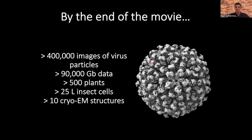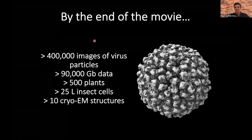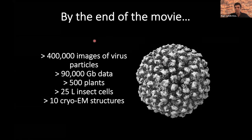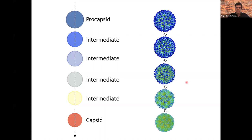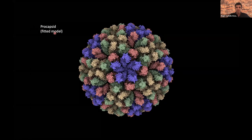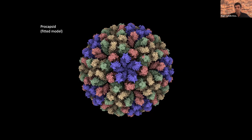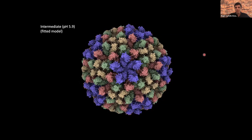The final movie took many particles, images, and structures. We have a summary of these structures going from the procapsid to the capsid, with a reduction in size as maturation proceeds. To compare them, I'll show you the fitted models into the cryo-EM maps. Each different color is one subunit. Subunits go in tetramers — groups of four — which is why there are four different colors. This is the procapsid, then an intermediate, and then the capsid. You can see a huge change in conformation.